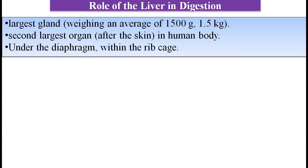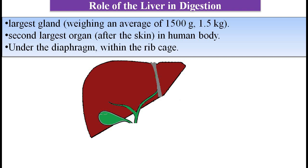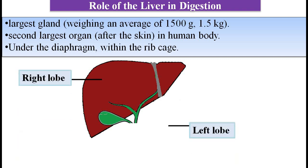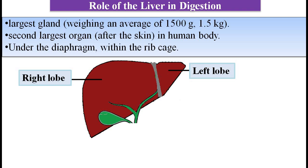Liver is the largest gland of the body with an average weight of 1500 grams. It is the second largest organ after the skin in the human body. It lies under the diaphragm within the ribcage. Liver is divided into two major lobes: the right lobe and the left lobe.